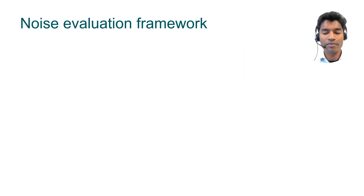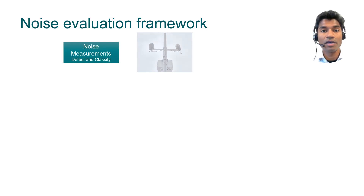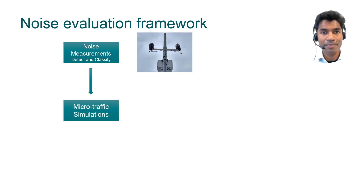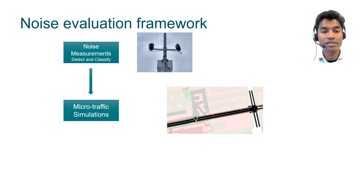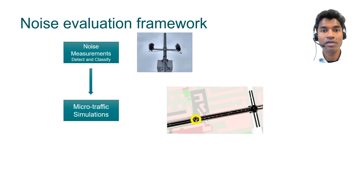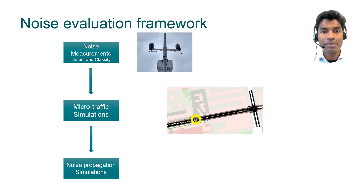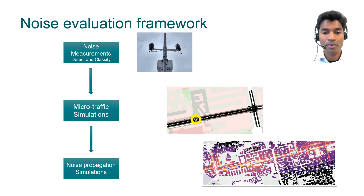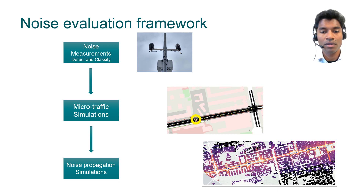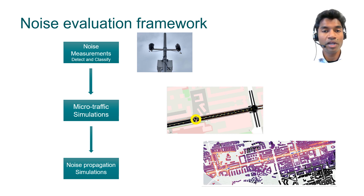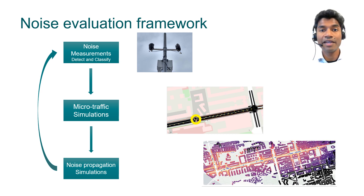Let us now look at the noise evaluation framework. It begins with making noise measurements for the purpose of detecting and classifying vehicles. This information is then fed into microtraffic simulations — an example is shown where the yellow ring corresponds to where the noise measurements were taken, allowing for simulating the vehicles on the adjacent road network. These microtraffic simulations can then be used in noise propagation simulations, which helps us find the noise propagation exposure. Finally, the outcome of these simulations can then be used to check for validity and for fine-tuning, by comparing them with the original noise measurements.